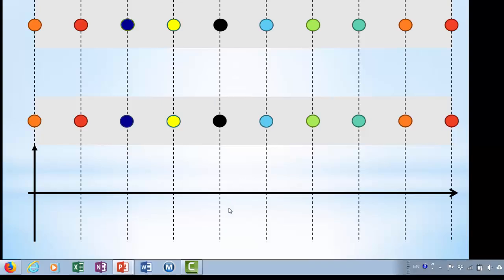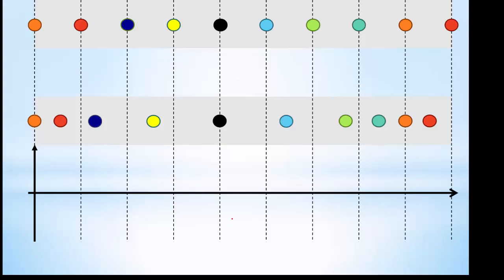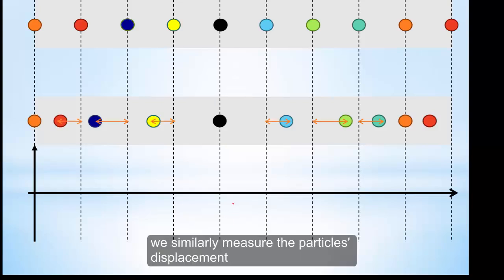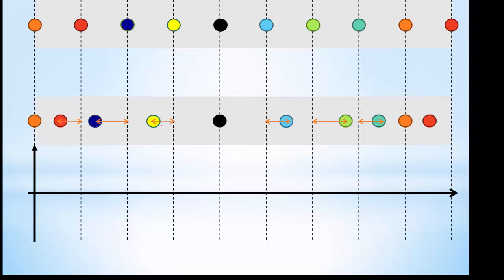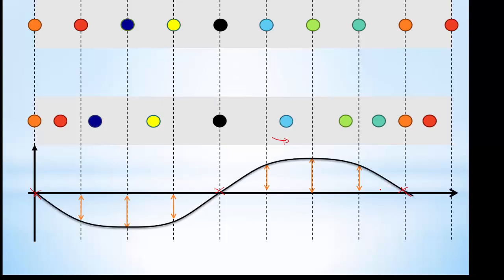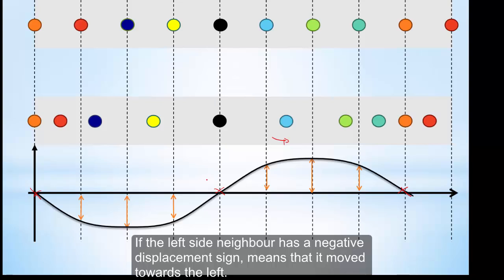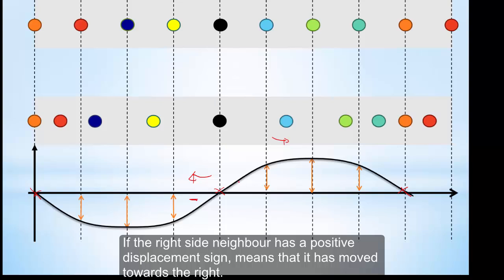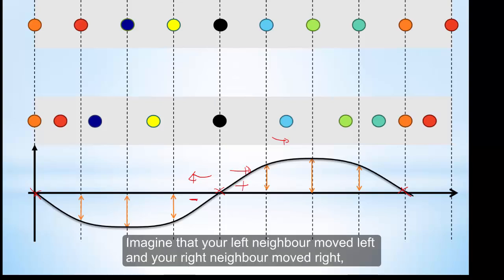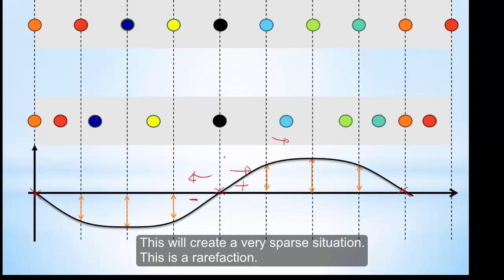For rarefaction, we similarly measure the displacement of neighboring particles. This time, the left neighbor moves towards the left, so it has a negative displacement, and the right neighbor has moved towards the right, so it has a positive displacement. You form the same wave pattern, with zero displacement at the center. So for rarefaction, if the left side neighbor has a negative displacement — meaning it moves towards the left — and the right side neighbor has a positive displacement — meaning it moves towards the right — this creates a situation where it is very sparse, and thus this is a rarefaction.